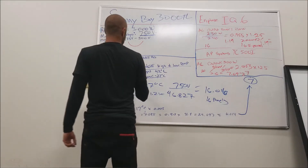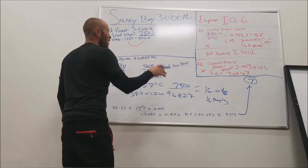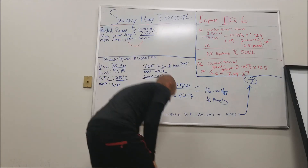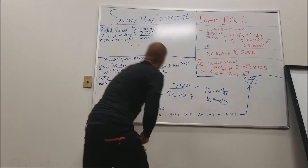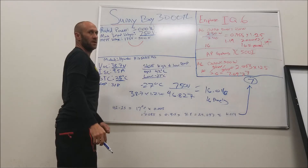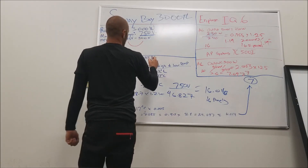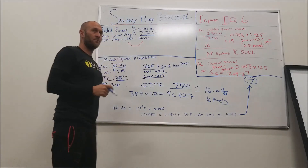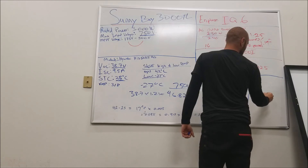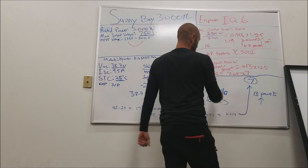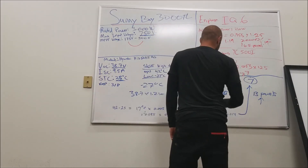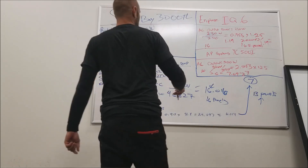38.478 volts is what your VMP will be after the correction factor. Now divide the maximum MPPT voltage of 500 volts by 38.478 — that gives you 13.01, so that's 13 panels maximum for efficiency. To summarize: 13 panels for the maximum power point efficiency range, 16 panels absolute maximum before the inverter blows, and 7 panels minimum to stay in the MPPT range.